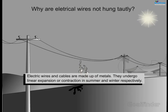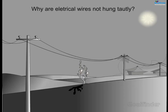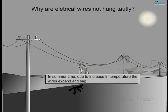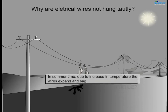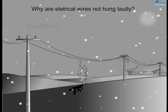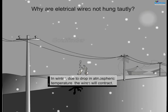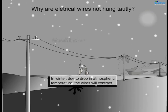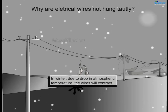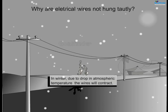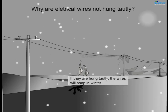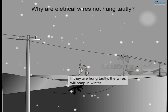Electrical wires and cables are made up of metals. They undergo linear expansion or contraction in summer and winter respectively. In summer, due to increase in temperature, the wires expand and sag. In winter, due to a drop in atmospheric temperature, the wires contract. If they are hung tautly, the wires will snap in winter.